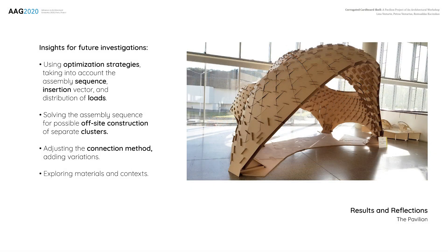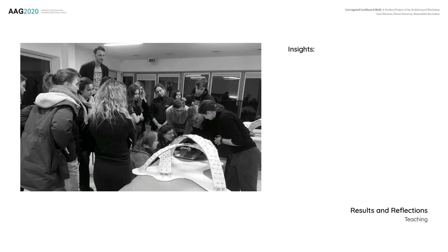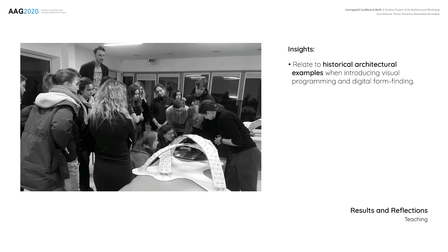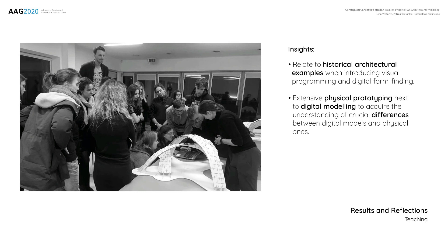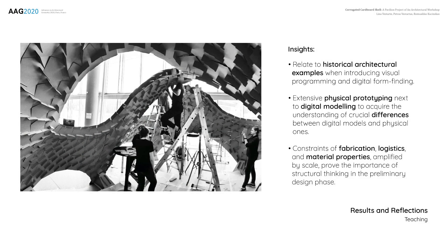In terms of teaching, one of the key takeaways would be the importance of relating to real, tangible examples when introducing digital tools — in this instance, historical architectural examples of form-finding. Another crucial aspect is extensive physical prototyping to acquire understanding of the main differences between digital and physical models. Finally, although the prototyping phase was much enjoyed by the students, building a larger structure — a pavilion — proved to be a better lesson, solidifying the importance of structural thinking in the preliminary design phase.